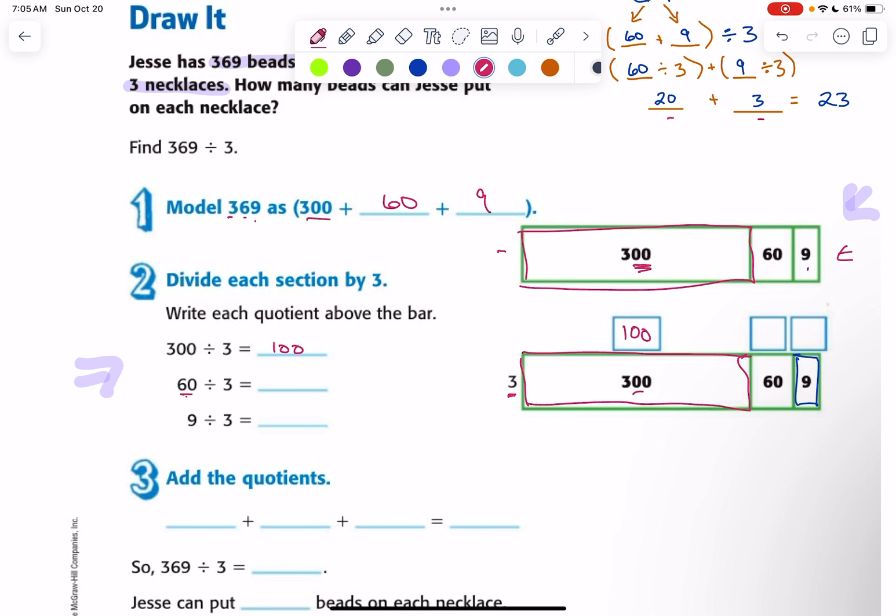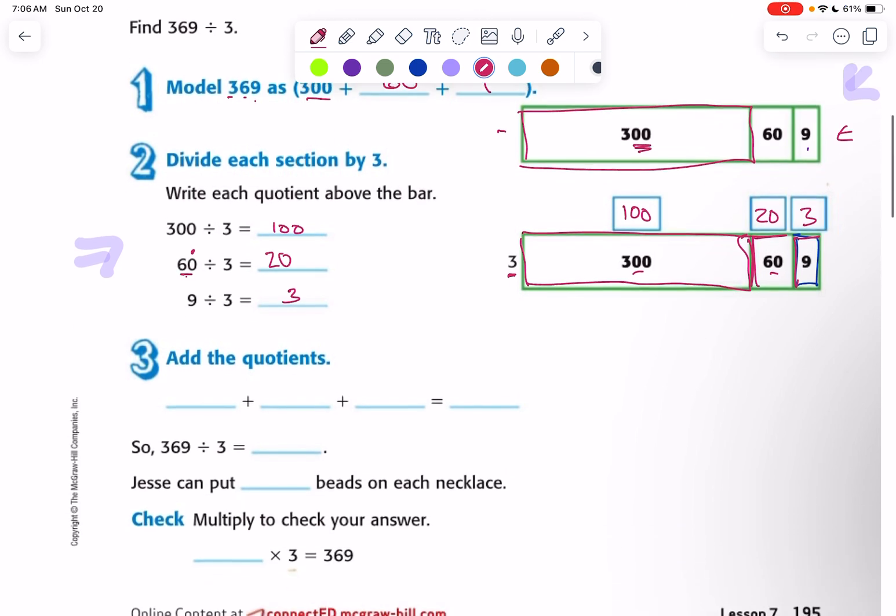60 divided by 3. 3 times 2 is 6. There's 1, 0. So 3 times 20 is 60. And over here we have 3. This is 20. And 3 times 20 equals 60. One more. 9 divided by 3 is 3. So we have a 3 by 3. That doesn't really look like a square, but I guess it is.